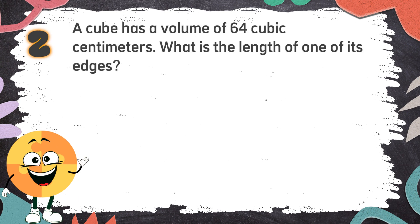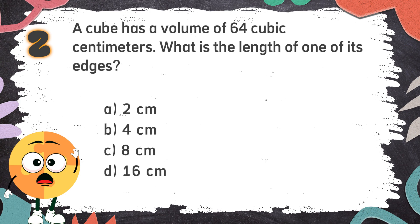Number 2: A cube has a volume of 64 cubic centimeters. What is the length of one of its edges? The choices are: A. 2 centimeters, B. 4 centimeters, C. 8 centimeters, D. 16 centimeters.